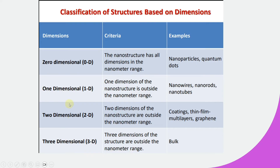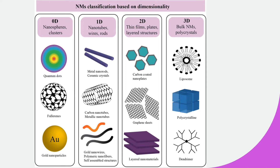So what are the 1D nanoparticles? 1D nanoparticles are those nanostructures in which only one axis is out of the nanometer range. Examples include metal nanorods, ceramic crystals, carbon nanotubes, metallic nanotubes, and gold nanowires. As you can see here, carbon nanotubes have a long length compared to their diameter.